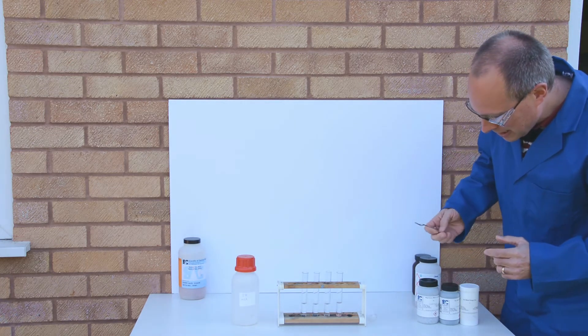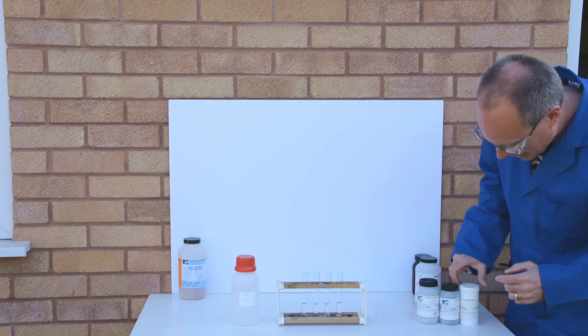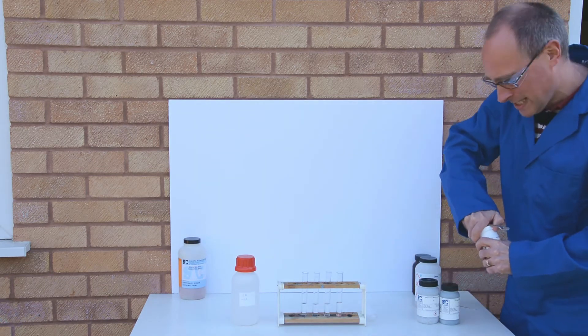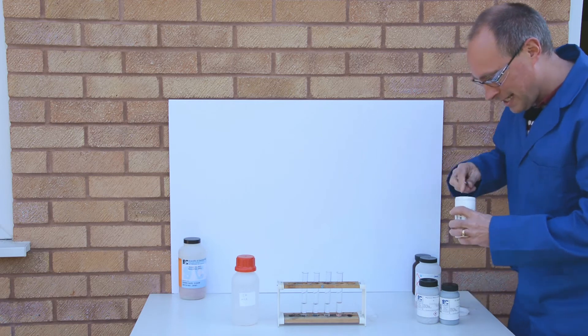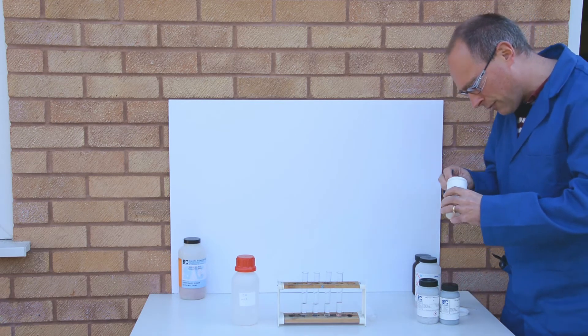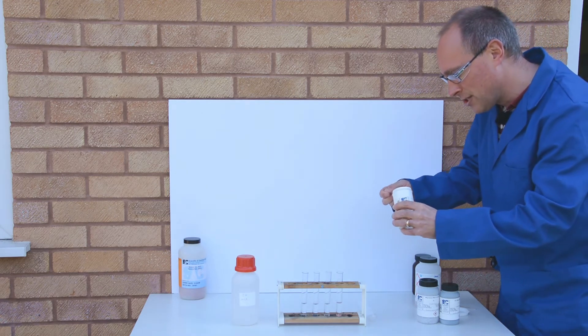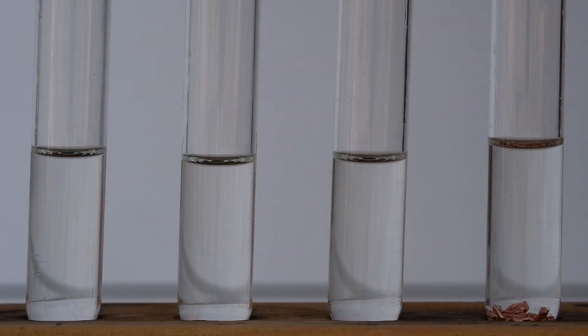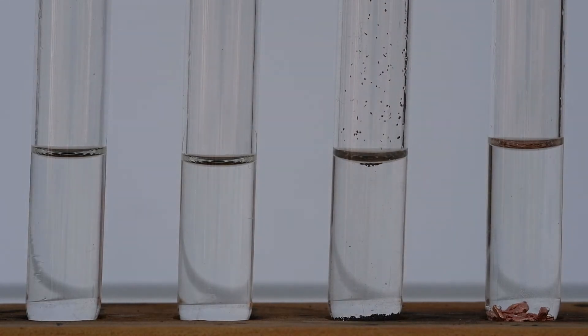In the second test tube I'm going to put a little bit of iron, and again we'll look for evidence of any chemical reaction. So the iron filings here, just put into the acid there.